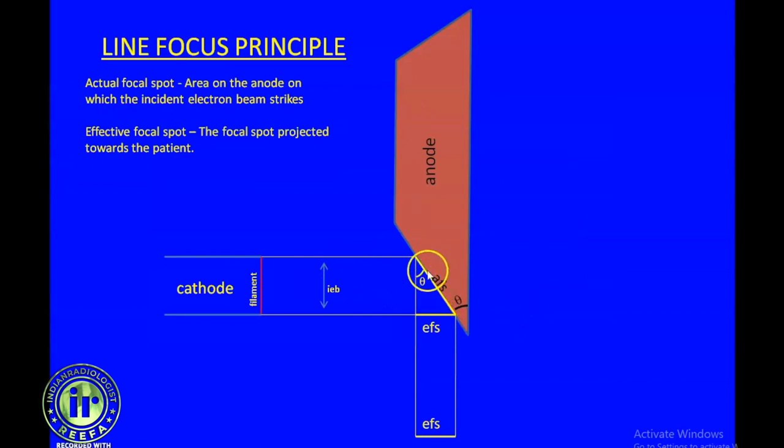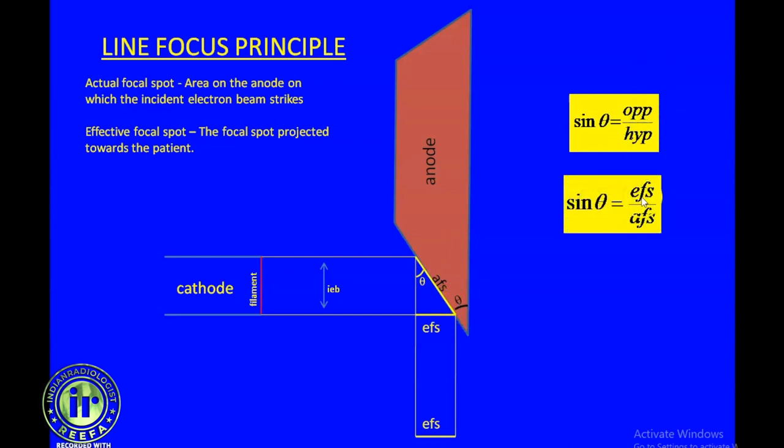When the beam strikes the anode and this is the projected beam called the effective focal spot, you can see these two beams are making a right angle triangle. This is the anode angle constituting one angle of this right angle triangle. In basic high school trigonometry, sin θ equals opposite by hypotenuse. The opposite side is the effective focal spot. The hypotenuse is the actual focal spot. So sin θ = efs/afs, and from this we get efs = sin θ × afs. If we know the anode angle and the width of the actual focal spot, we can calculate the size of the effective focal spot.